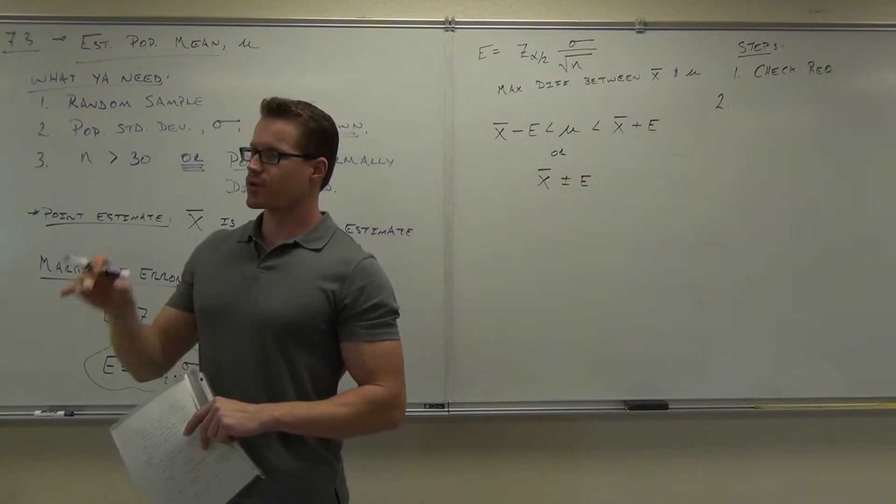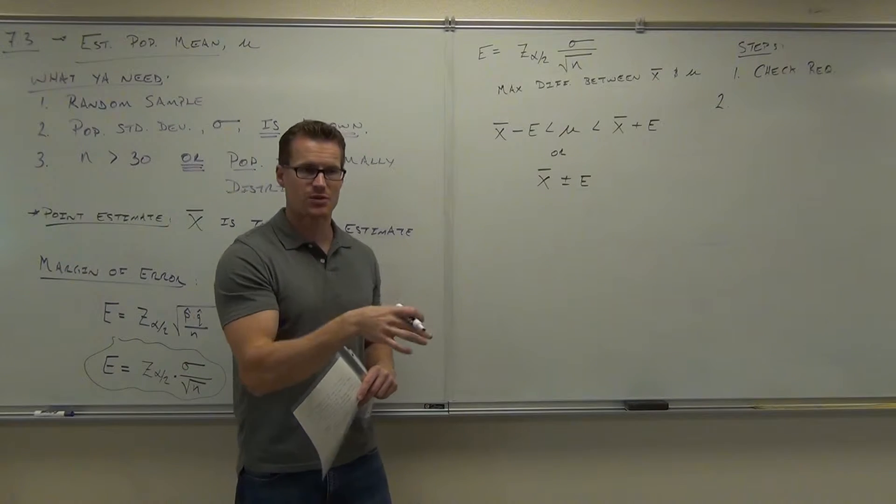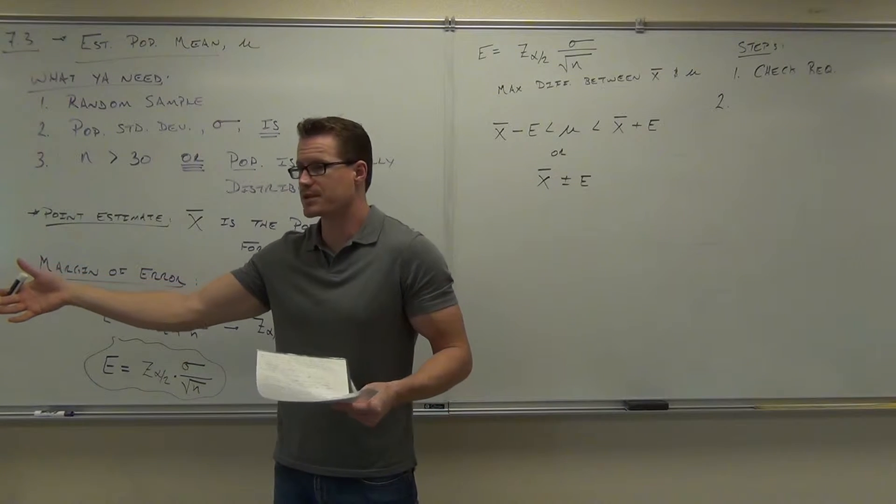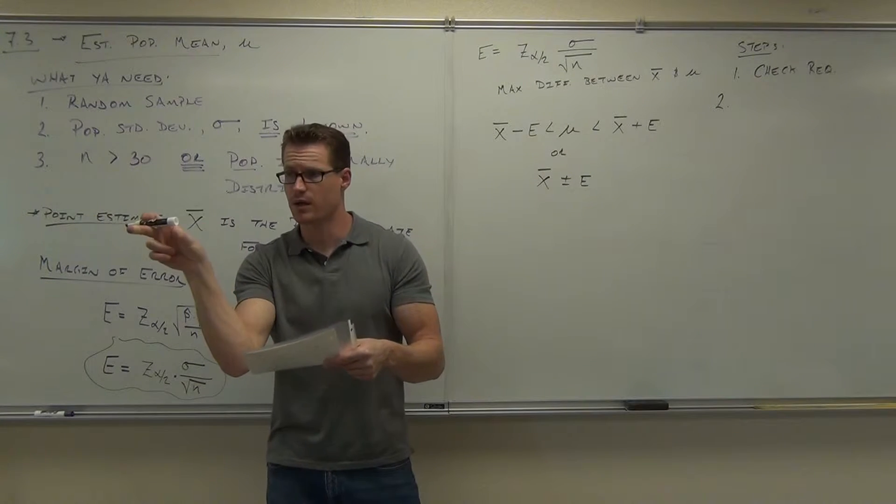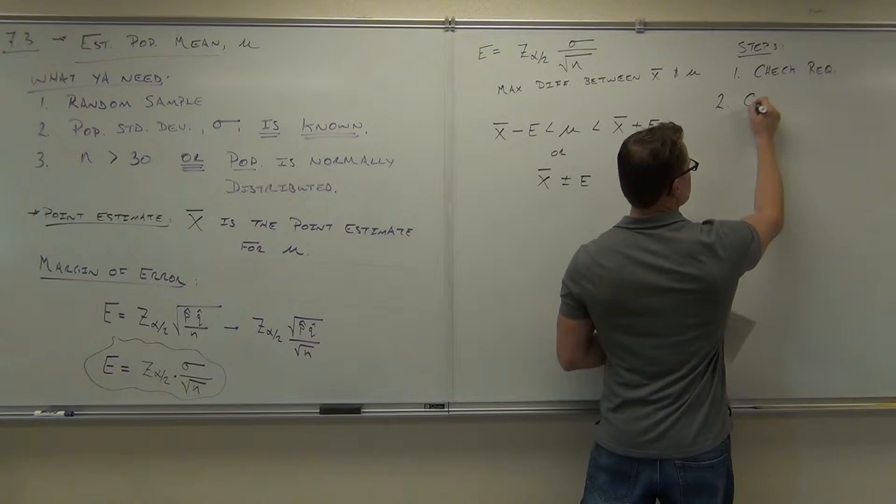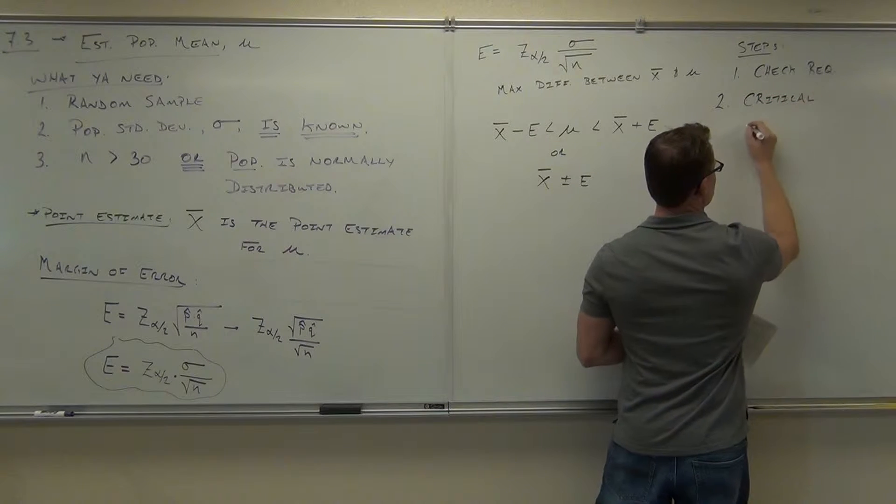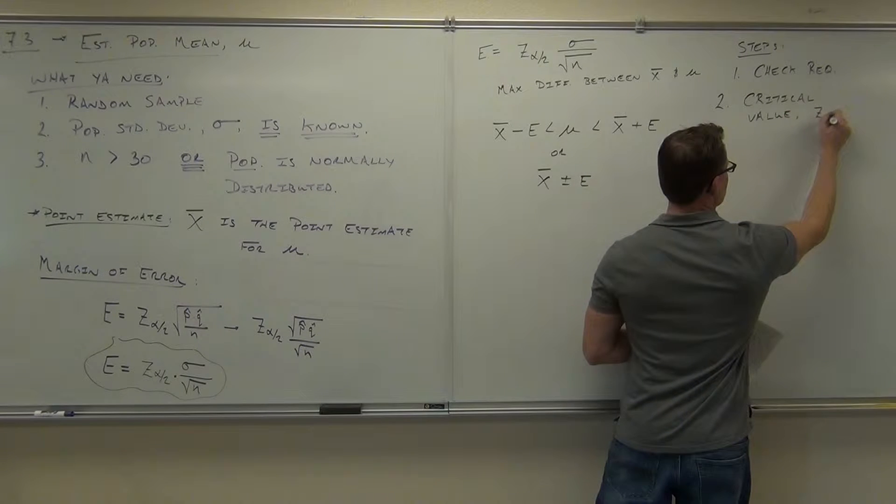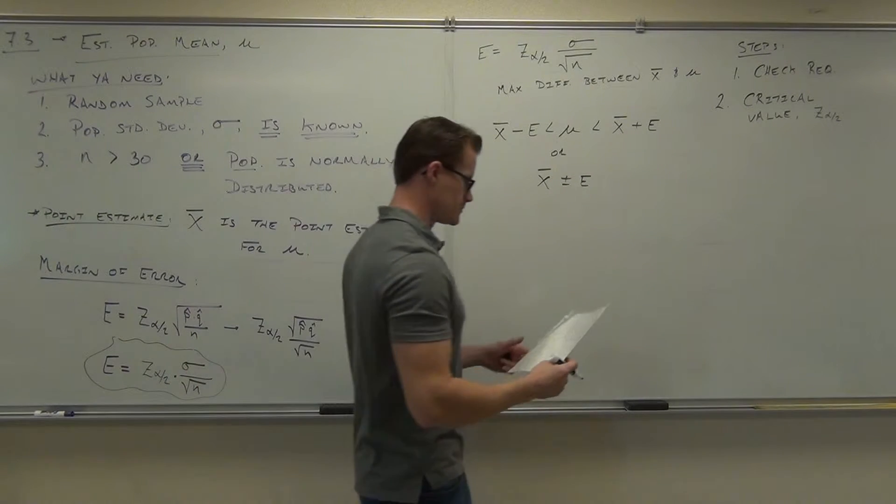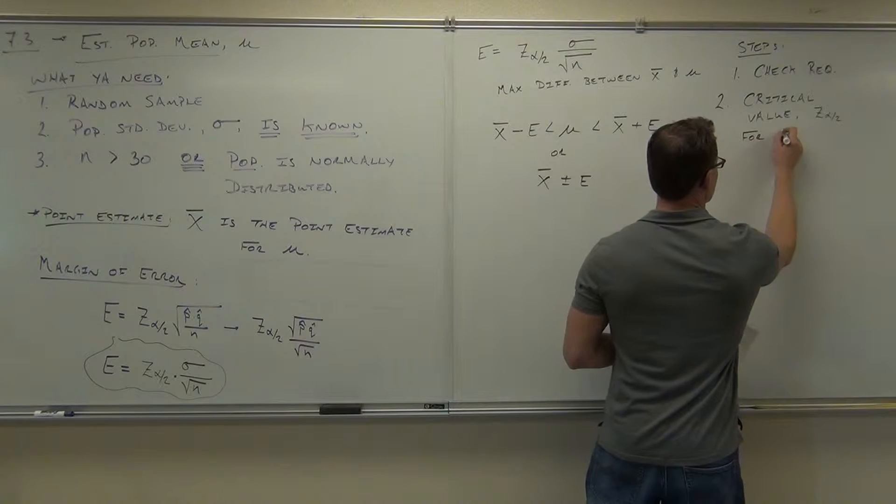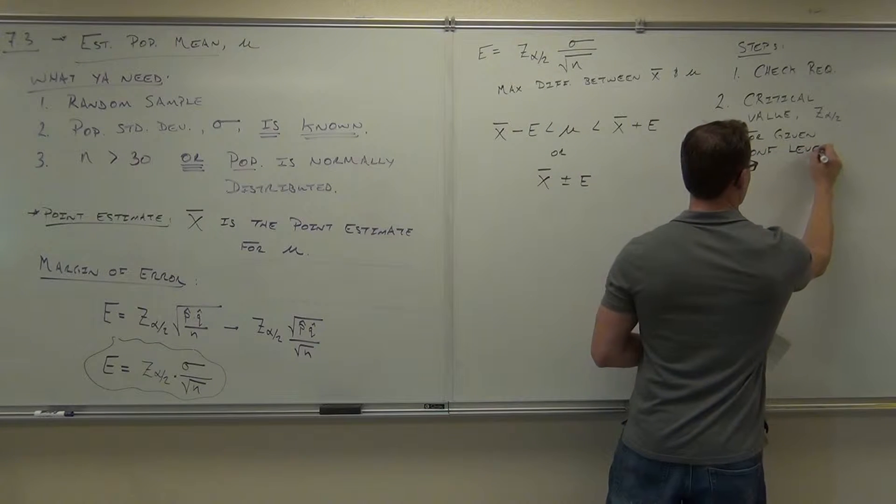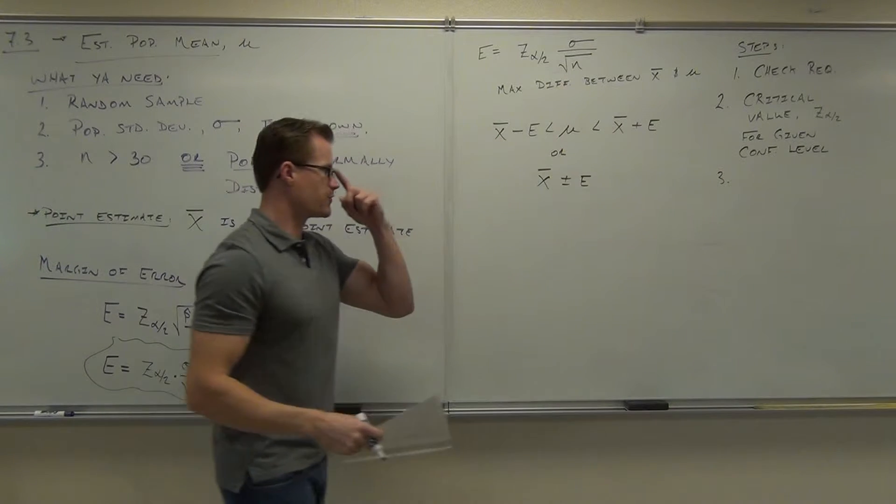Number two, you're going to find your critical value. It's going to have a level of confidence. It's going to say 90% or 95% or 99 most likely. If it says something else like 98 or 96, you've got some of those on your homework, right? You had to actually look that up in the table. You had to split that up and say, well, for 98 would be .01. You take your .02 divided by 2. You look at .01, it'll give you a certain z. So somehow, we're going to find our critical value. So that's that z alpha over 2 for a certain confidence level. Critical value for the given confidence level.